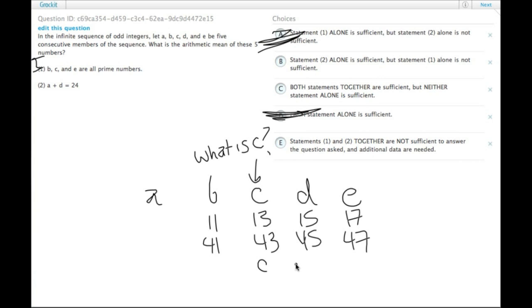and then D will be C plus two, because it's an odd number, two higher, and then A will be C minus four, because B will be C minus two, it's two less.